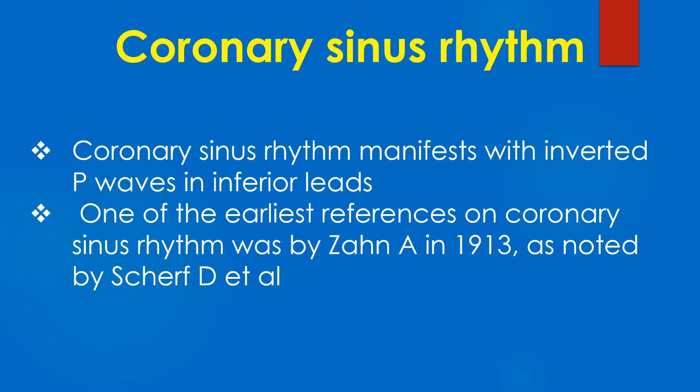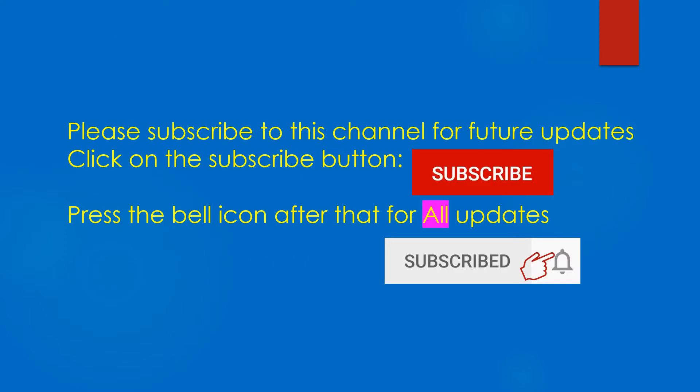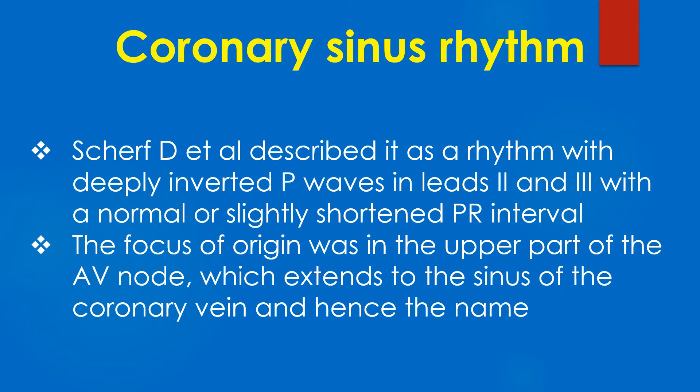One of the earliest references on coronary sinus rhythm was by Zahn in 1913, as noted by Sherf D and associates. Sherf D and colleagues described it as a rhythm with deeply inverted P waves in leads 2 and 3, with a normal or slightly shortened PR interval. The focus of origin was in the upper part of the AV node, which extends to the sinus of the coronary vein, and hence the name.